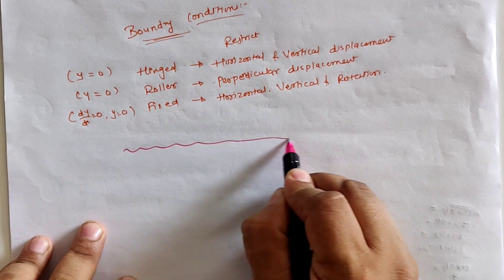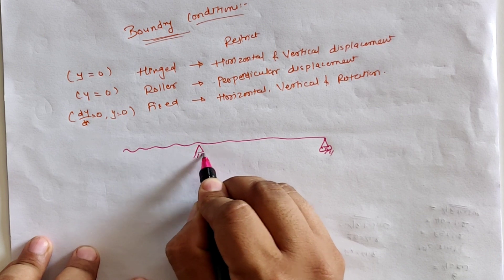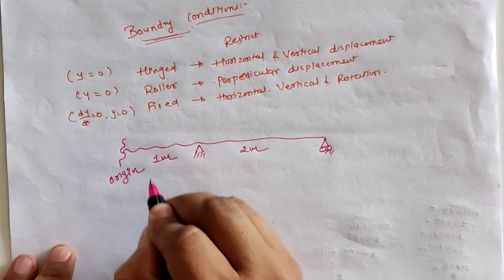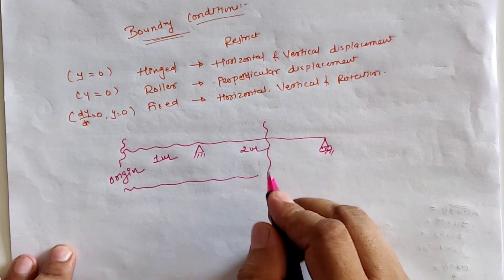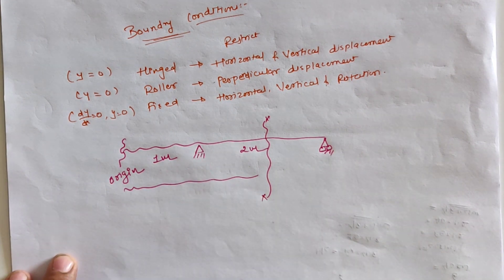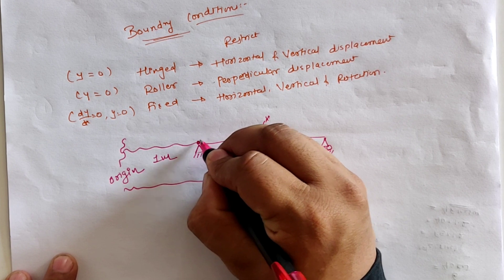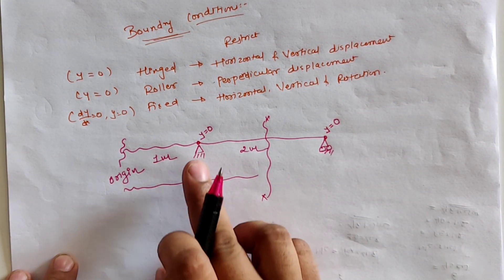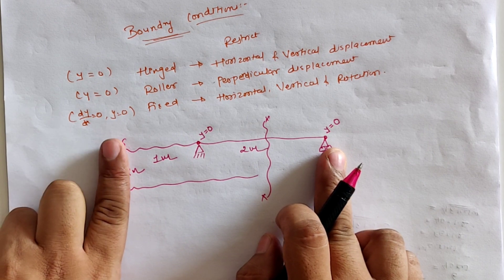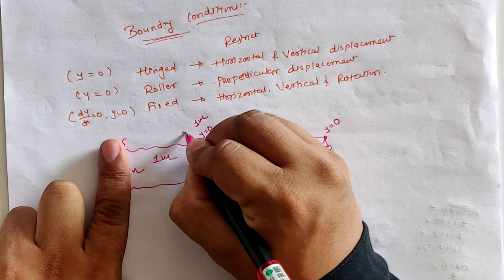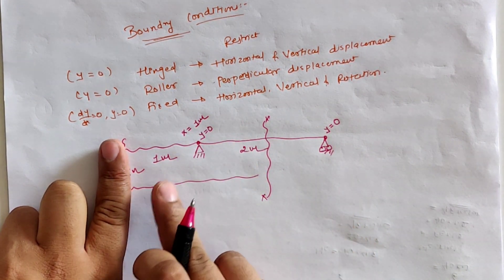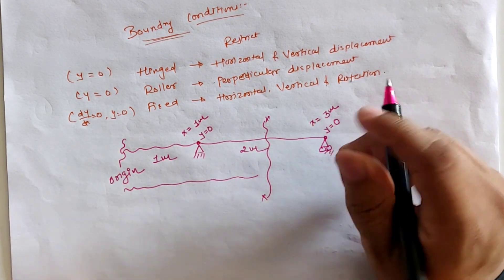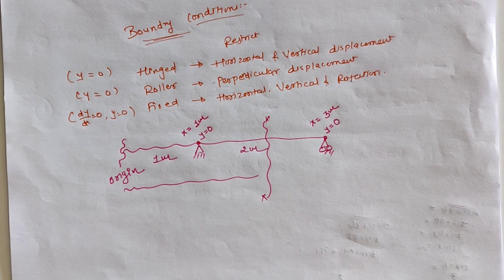For an overhang beam, if we take the extreme left as origin and place the section between the two simply supported points, the boundary conditions are as follows: at the hinge support, deflection is zero. The hinge support is at 1 meter from the origin, so at x = 1 m, y = 0. The roller support is at 1 + 2 = 3 meters from the origin, so at x = 3 m, y = 0.